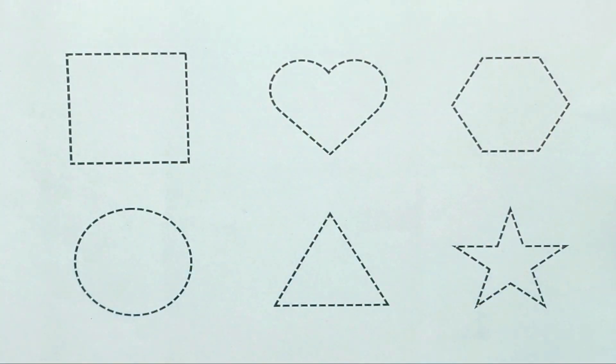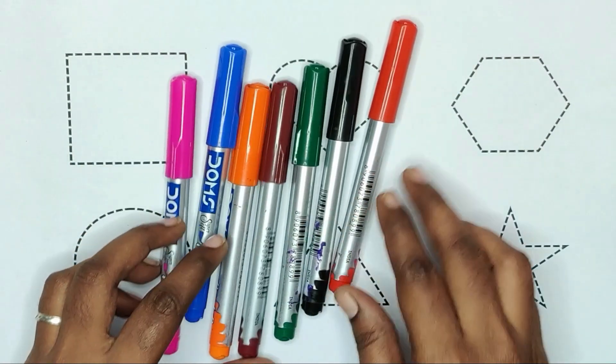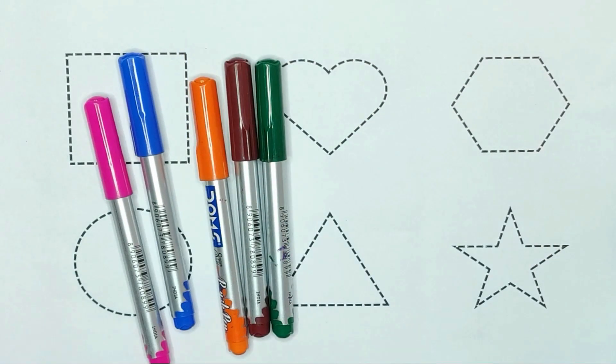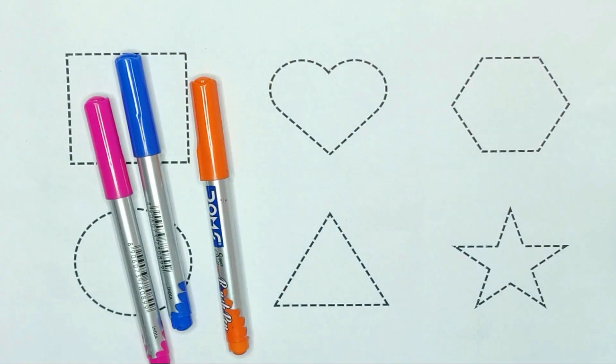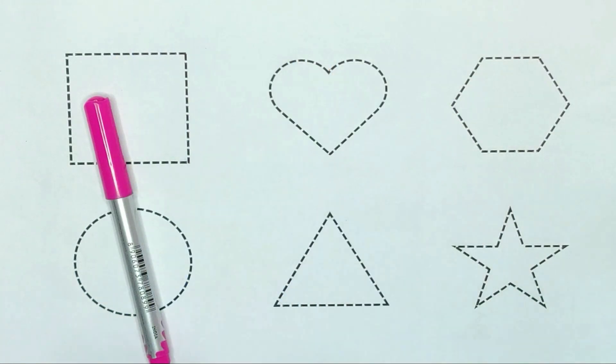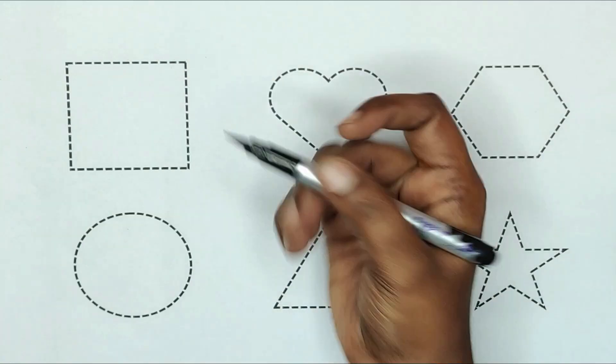Today we are learning shapes with color pens. So first, the colors: red, black, green, brown, orange, blue, and pink.